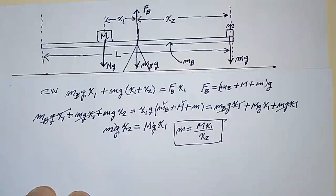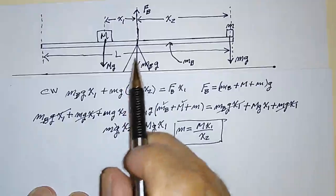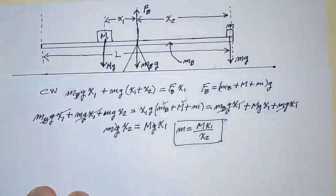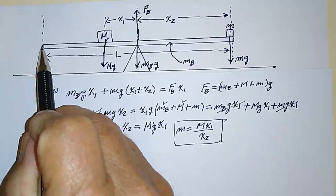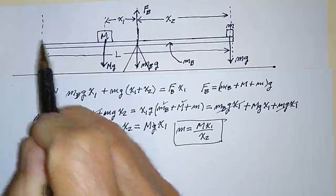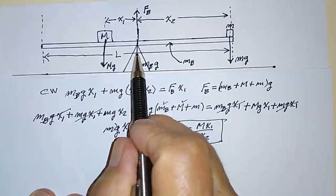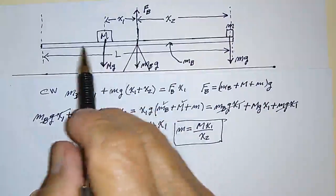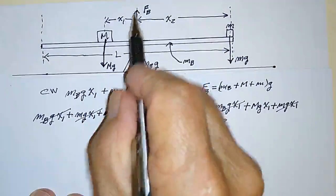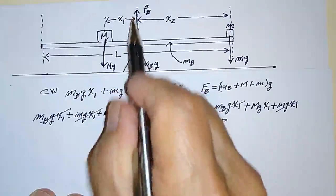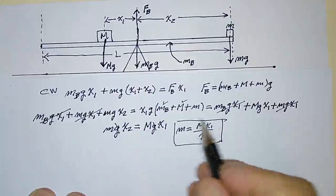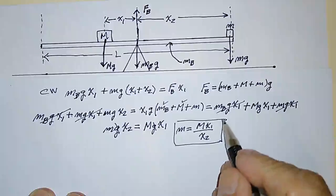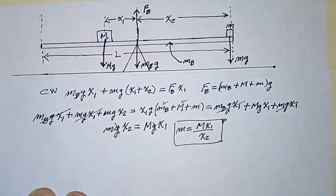This makes the point: it doesn't matter which point you pick to do your torque balance equation. You could pick any other point — the clockwise torques would be those forces times their distances, and the counterclockwise torque would be the upward force times its distance — and you'd get exactly the same thing. I'll leave that as an exercise for you to do.